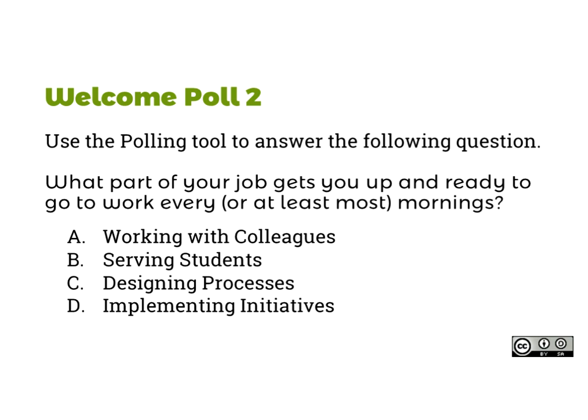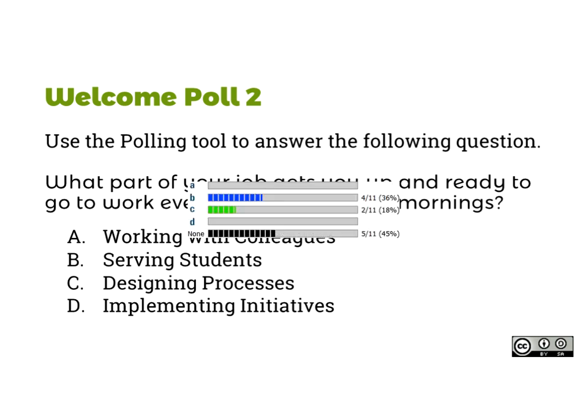I love 'all of the above' — maybe we should have added an E option. Let's give everybody a chance to answer. I'll go ahead and publish those results. Excellent — we have more people choosing 'all of the above.' I like that.